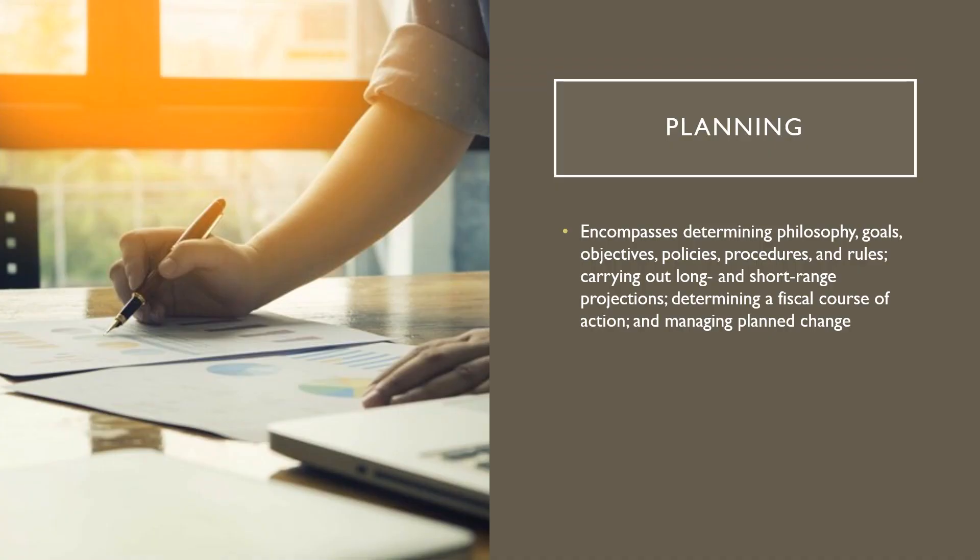Planning is the first phase of the management process. It encompasses determining the philosophy, goals, objectives, policies, procedures, and rules. We carry out long and short range projections, determine a fiscal course of action, and then manage that planned change. This is where a proactive and deliberate leader or manager decides in advance what to do, who's going to do it, how, when, and where it's going to be done.